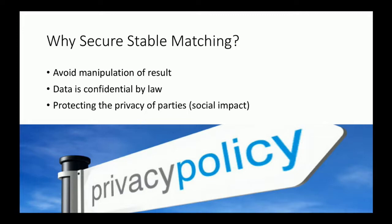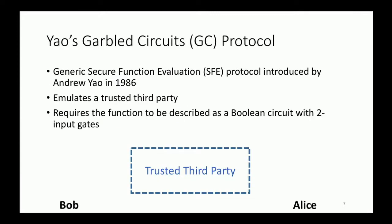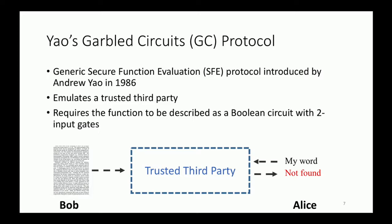We have used Yao's garbled circuit protocol. The GC protocol is a classic two-party secure function evaluation method introduced by Andrew Yao in 1986. At a very high level, GC emulates a trusted third party to which two parties can give their inputs and receive their results. However, this is just a conceptual description and in reality there is no third party and the protocol is run between two parties only.